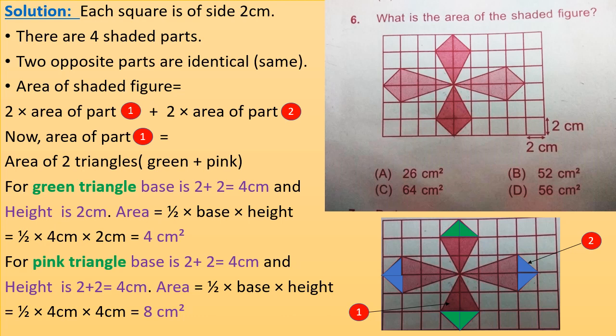In part one, the two opposite figures are identical, and in part two, the two opposite shaded figures are also identical. So the area of the shaded figure equals 2 times the area of part one plus 2 times the area of part two, since the opposite shaded areas are identical.